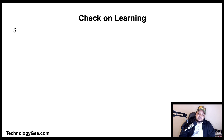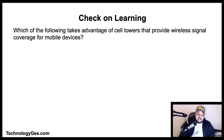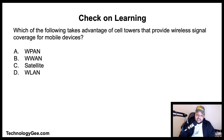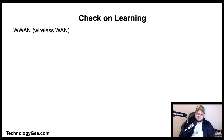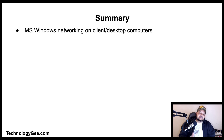Question three: which of the following takes advantage of cell towers that provide wireless signal coverage for mobile devices — is it WPAN, WWAN, satellite, or WLAN? The correct answer is WWAN, or wireless wide area network.